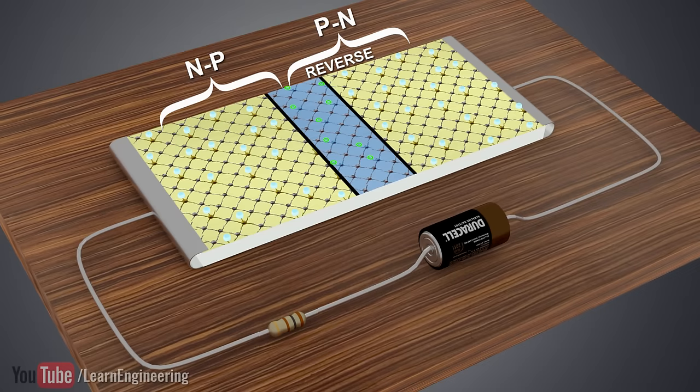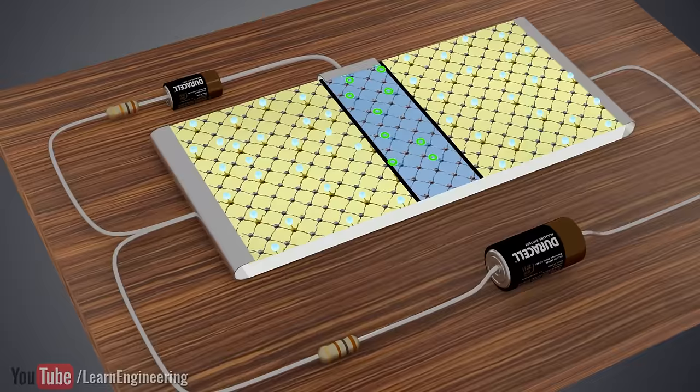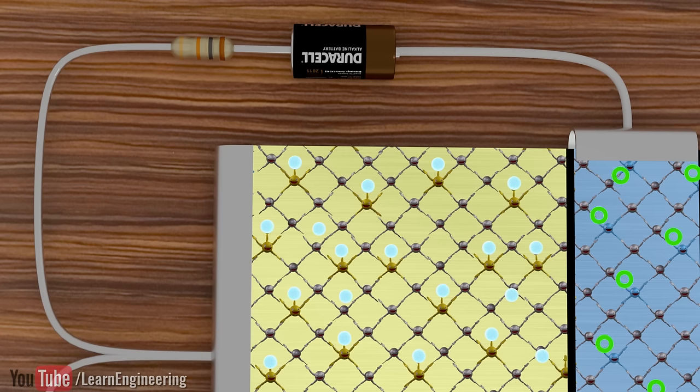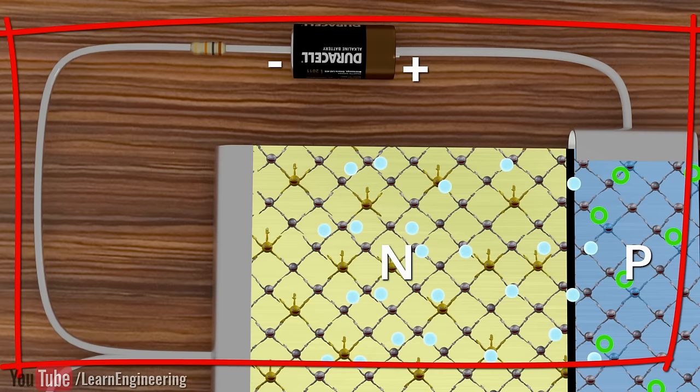Now, let's connect the second power supply as shown. The power supply should have enough voltage to overcome the potential barrier. So, this is just a forward biased diode. Thus, a high number of electrons will be emitted from the n-region.